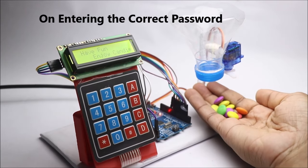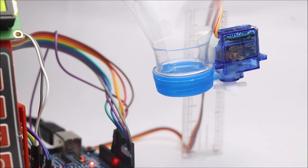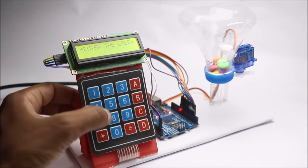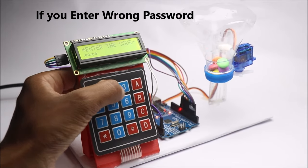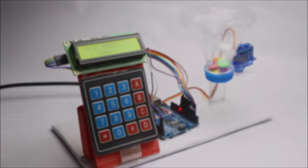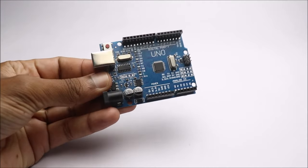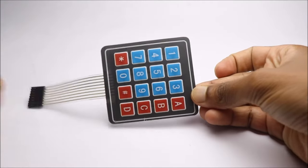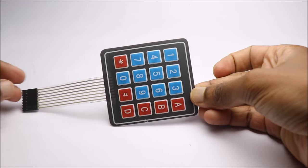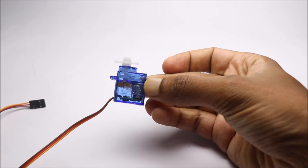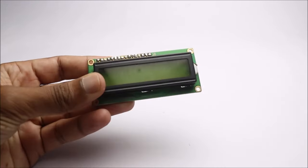Hey guys, in this video I will show you how to make this password protected candy dispenser that dispenses candies only on entering the right password. To build this project you need Arduino Uno, 4x4 matrix keypad, micro servo, and LCD module with I2C.